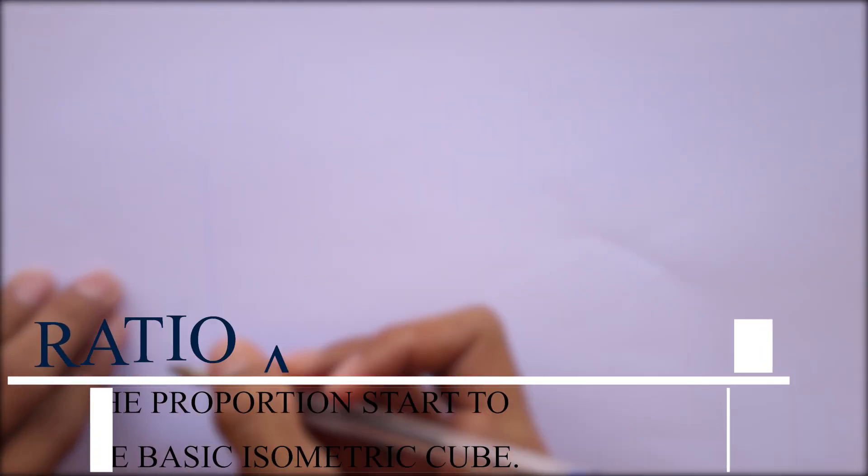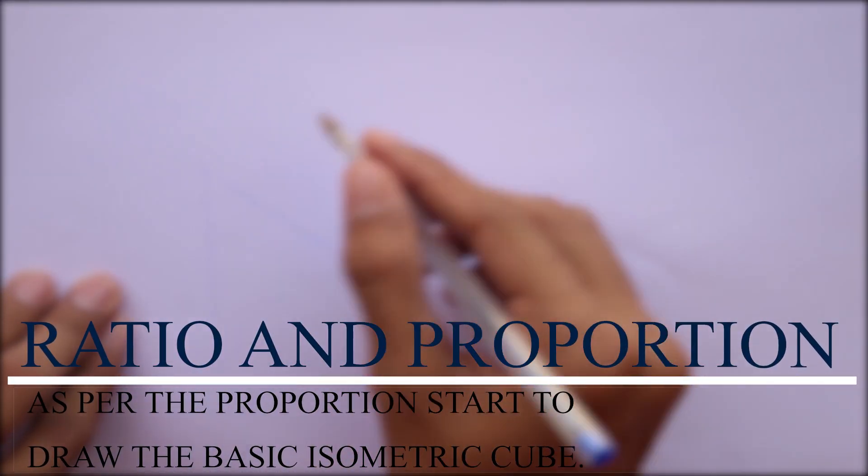Tip number 1: Ratio and Proportion. As per the proportion, start to draw the basic isometric cube.